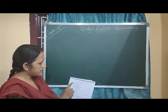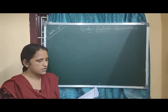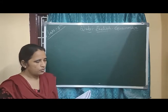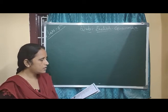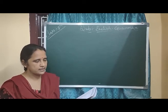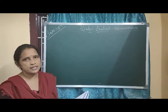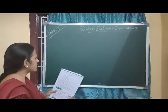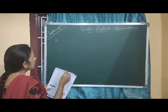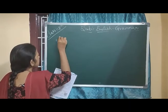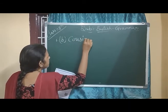The first question is: the town mouse and the country mouse are — who are they? The first option is friends, the second is cousins, and the third is classmates. I am writing the correct option for you. The correct answer is option B: cousins.